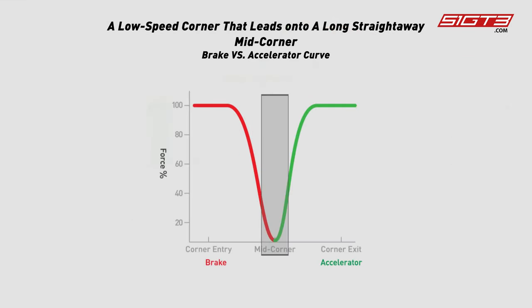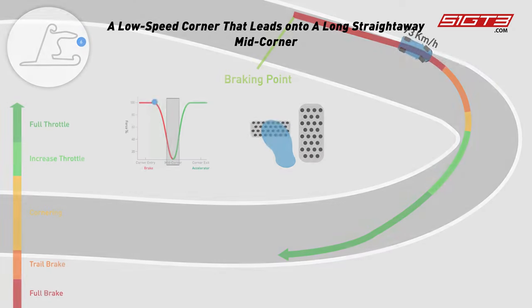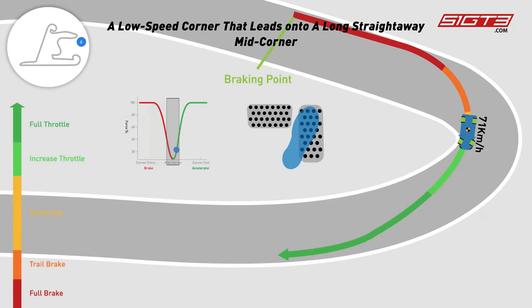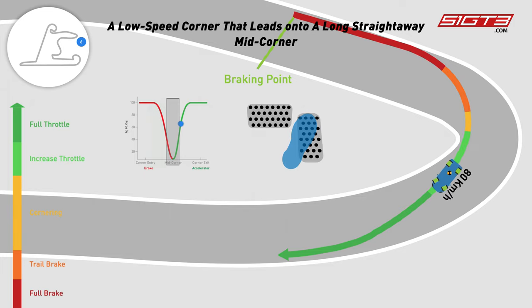The middle part of this brake versus accelerator curve represents the mid-corner phase. Notice how we should switch from the brake to the accelerator during this phase. What we want to do here is to switch smoothly between the brake and throttle to balance the front and rear weight of the car, releasing the overall grip.